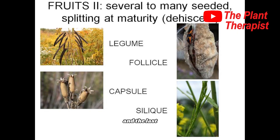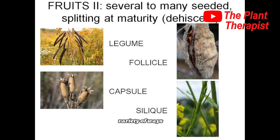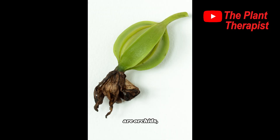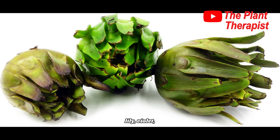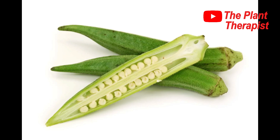The last type of dehiscent dry fruit is the capsule. Capsules are the most common dry fruits that split. They consist of at least two carpels and split in a variety of ways — some split along the partition between the carpels, while others split through the cavity in the carpel. Examples of capsules are orchids, lily, violet, and okra.